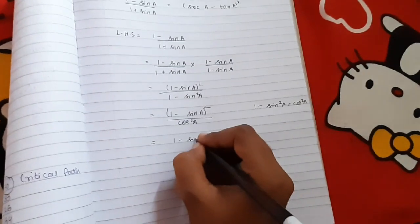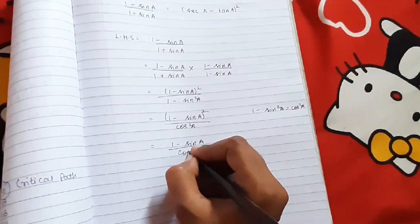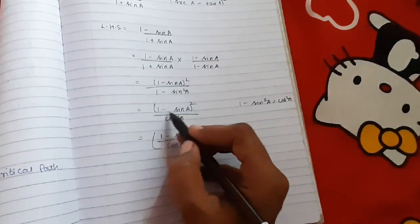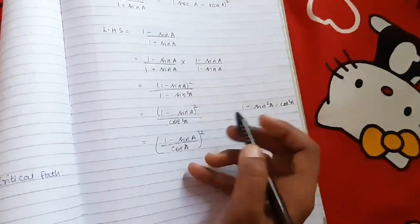(1 - sin A) / cos A. We will take it as a whole square because it is also having whole square, and it is also having a whole square.